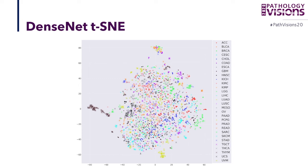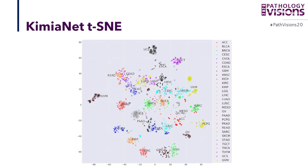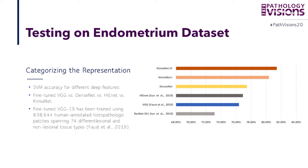When we visualize DenseNet, we see a mishmash of the 30-something primary diagnoses we classified — they are not well separated. When we go from DenseNet to KimiaNet, things get really well separated and you can clearly distinguish them. That's one of the ways to visually verify that training has had a real impact on the generalization of the network.